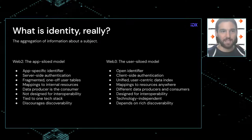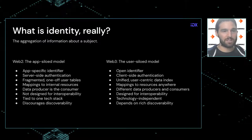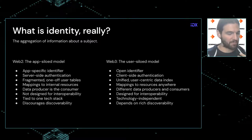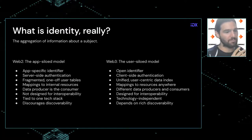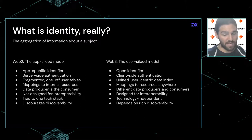Building on what Daniel said, identity is really the aggregation of information about a subject — the entire universe of all the things you say, do, your presence online. In Web2, we have app-specific identifiers that require server-side authentication. In the traditional relational database model, you build a user table, but these are all fragmented and app-siloed. They can only map to data produced by the user as they interact with that single application, and they're not designed for interoperability.